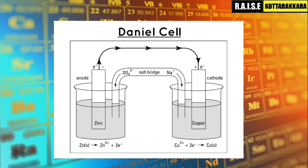The zinc electrode releases zinc 2 plus ions into solution. Electrons flow from the zinc electrode through the external circuit to the copper electrode. The current flows from right to left, while electrons flow from left to right.